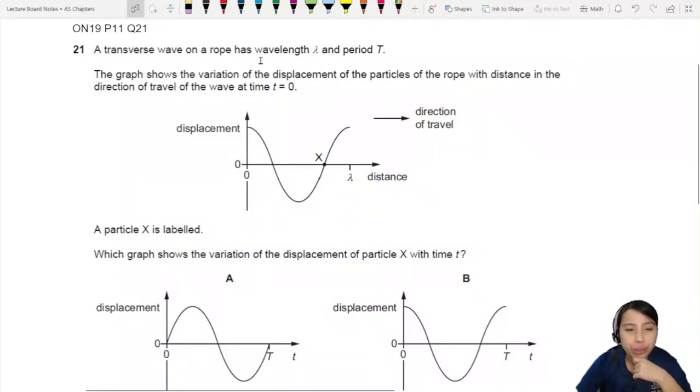A transverse wave on a rope has wavelength lambda and period t. The graph shows the variation of the displacement of the particle of the rope. Whoa, hang on, the English. So this graph is displacement of the particle of the rope with distance.